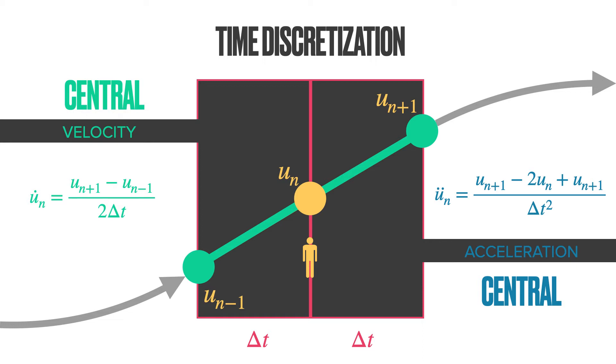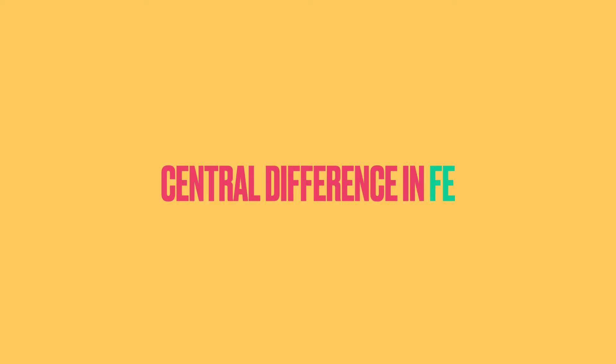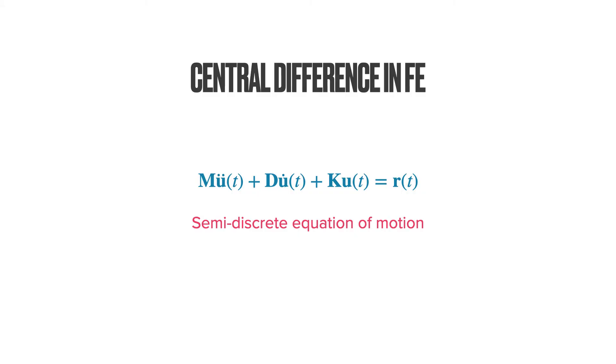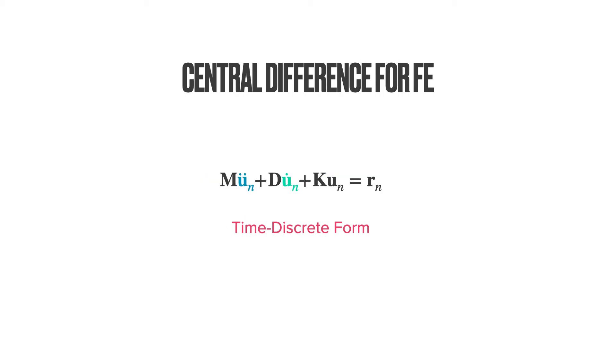Let us introduce these approximations into the semi-discrete equation of elastodynamics. Here is the semi-discrete equation. Now let us discretize this expression, that is, write this equation at time N. Introducing the central difference approximations into this expression, we get the following.